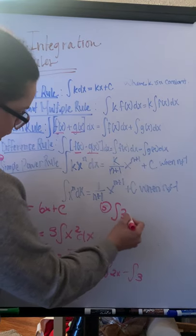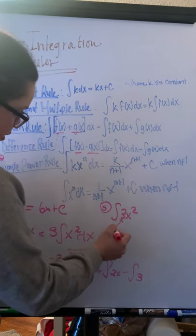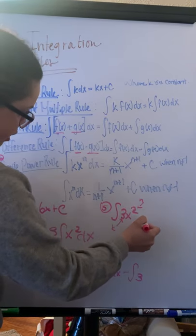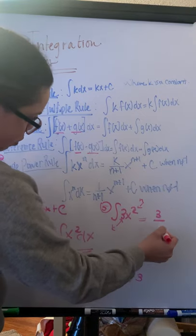So we have 3x squared, where 3 is k and 2 is m. The integral is 3 over m plus 1, which is 3, times x raised by 1. So 2 becomes 3.